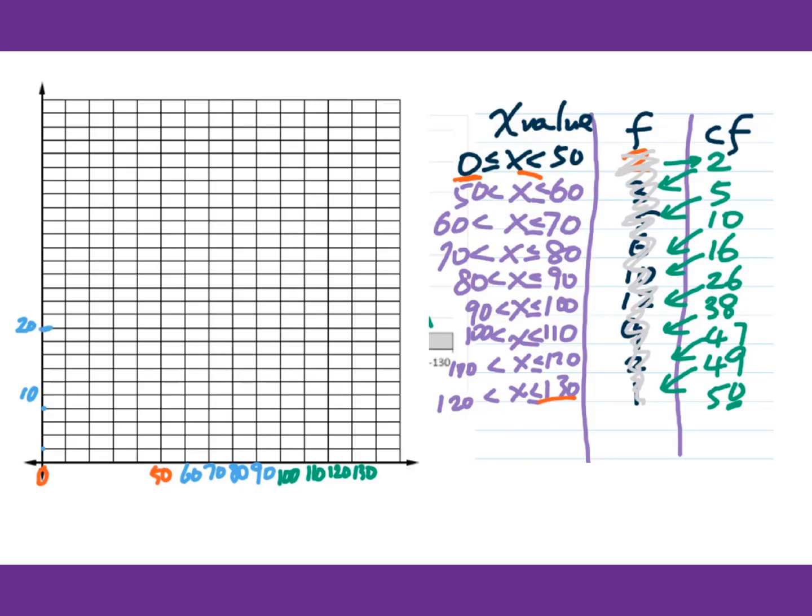For y-axis, 50, I can set up each unit stands for 2. So I can label at 2, 4, 6, 8, 10. So here's 20. There's 30, 40, here's 50.